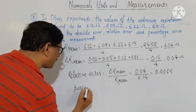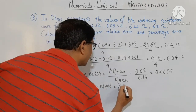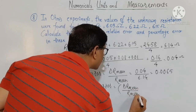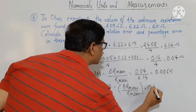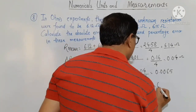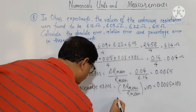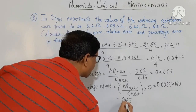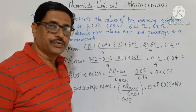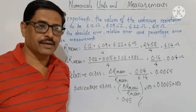Percentage error is the relative error expressed as a percentage. Therefore it is 0.0065 into 100, which gives 0.65. Being a relative quantity, it has no unit. The percentage error in the measurement of resistance is 0.65%. Smaller the percentage error, greater the accuracy of the measurement.